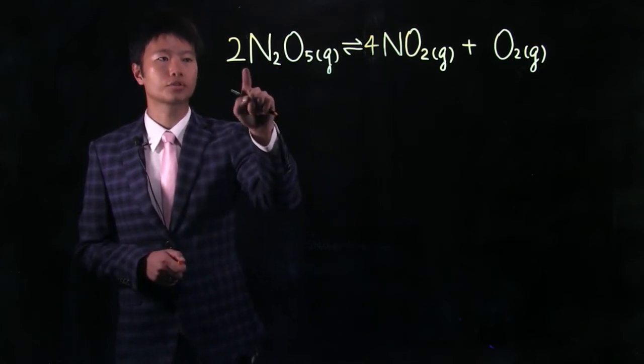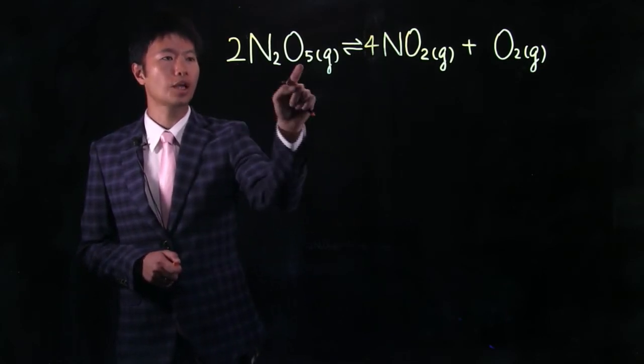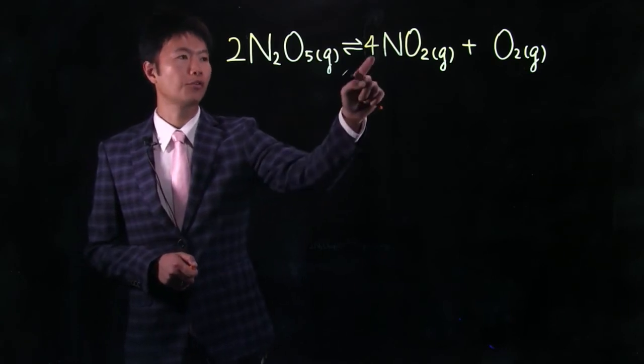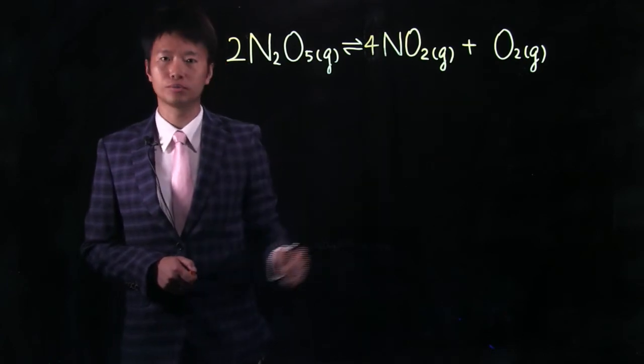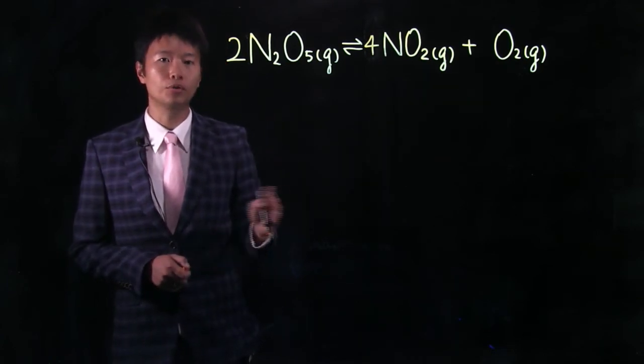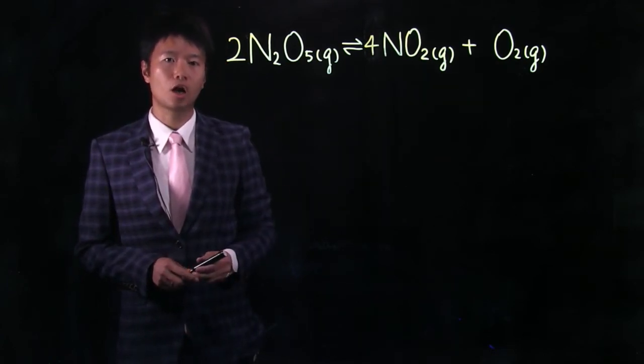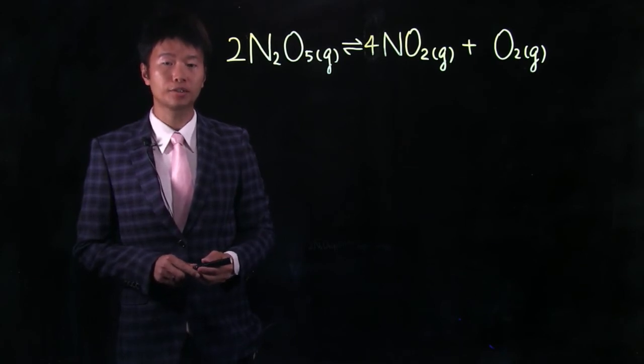So now we have oxygen left. We have two times five, ten oxygen on the left hand side. And we have four times two, which is eight, plus another two oxygen. So once again now on both sides of the reaction, we have 10 oxygen atoms. So now this chemical reaction is balanced.